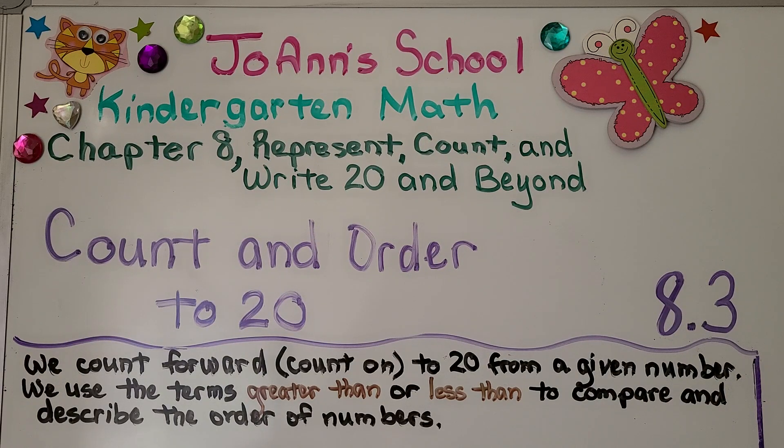Lesson 8.3. Count and order to 20. We count forward, which is count on, to 20 from a given number. We use the terms greater than or less than to compare and describe the order of numbers.